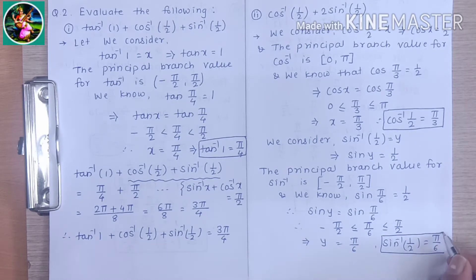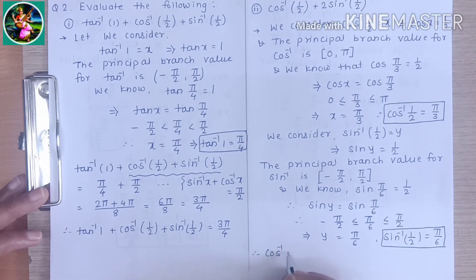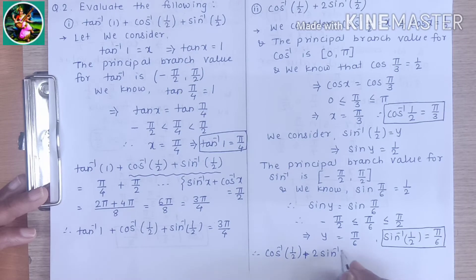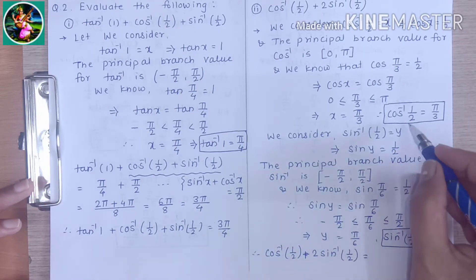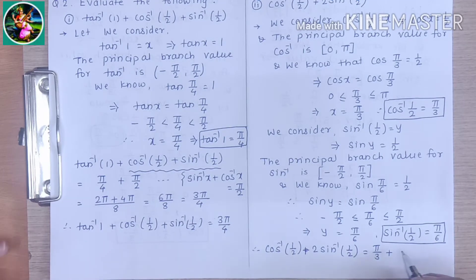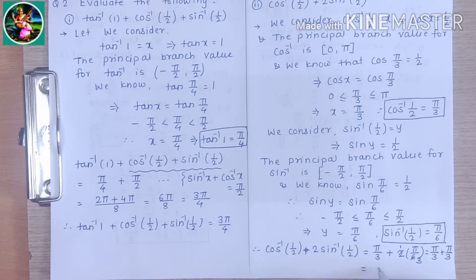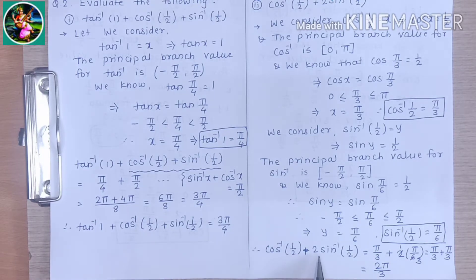Substituting these two values into the required expression: cos inverse of 1/2 plus 2 times sin inverse of 1/2 equals π/3 plus 2 times π/6, which gives π/3 plus π/3, equal to 2π/3. Therefore, cos inverse of 1/2 plus 2 times sin inverse of 1/2 is equal to 2π/3.